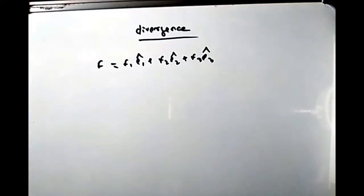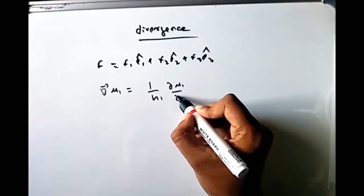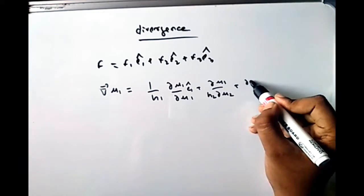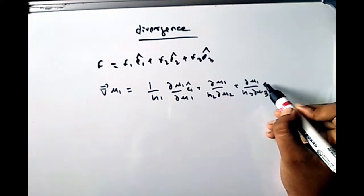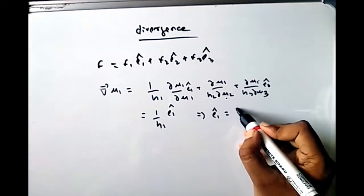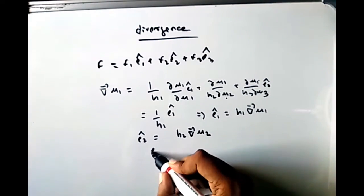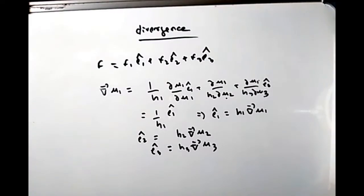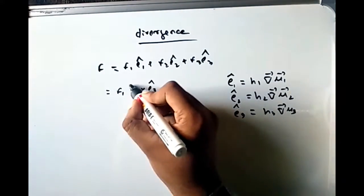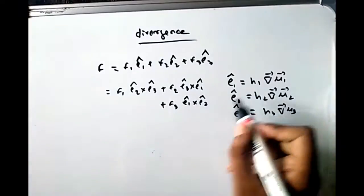Let F = F₁ ê₁ + F₂ ê₂ + F₃ ê₃. The gradient of u₁ is (1/h₁)(∂u₁/∂u₁) ê₁ = (1/h₁) ê₁, since the partial derivative with respect to u₁ of u₁ is 1, and the others are zero. So ê₁ = h₁ ∇u₁, ê₂ = h₂ ∇u₂, ê₃ = h₃ ∇u₃. Also, ê₁ × ê₂ = ê₃, giving h₁h₂ ∇u₁ × ∇u₂ = ê₃, and similarly ê₂ × ê₃ = h₂h₃ ∇u₂ × ∇u₃ = ê₁, and ê₃ × ê₁ = h₃h₁ ∇u₃ × ∇u₁ = ê₂.